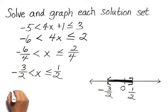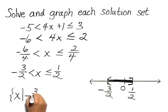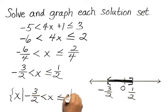The solution set in set-builder notation is the set of all x such that negative 3 halves is less than x and x is less than or equal to 1 half.